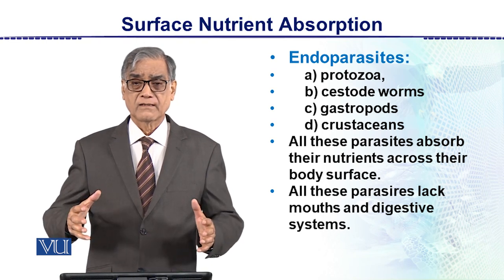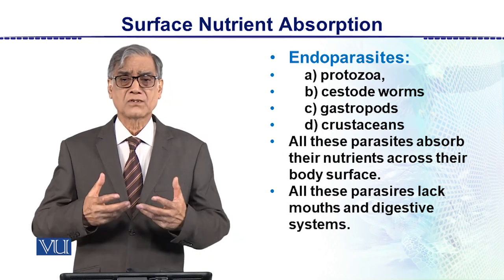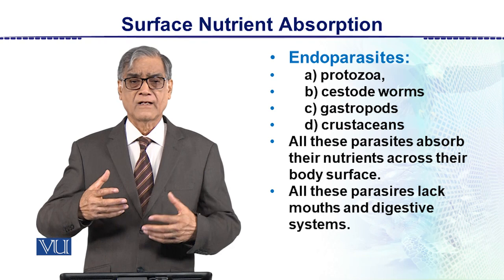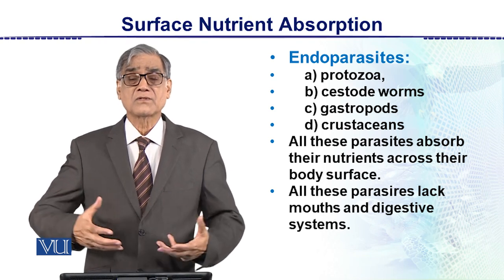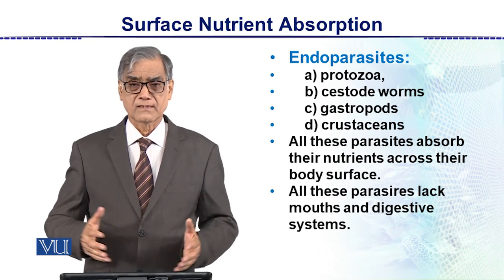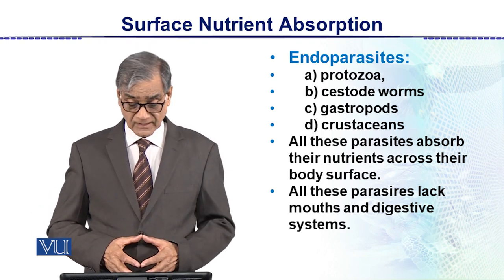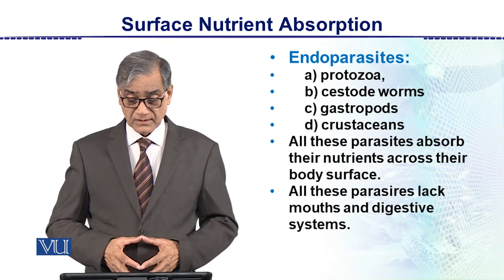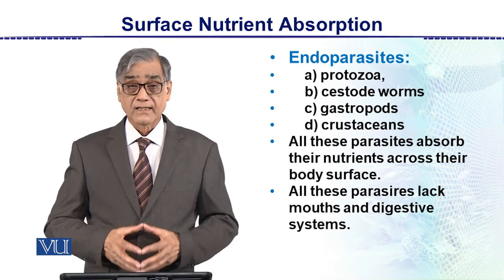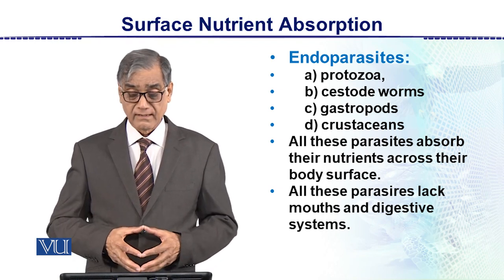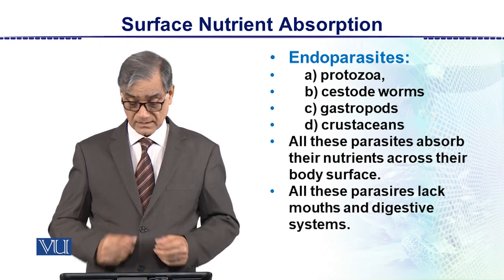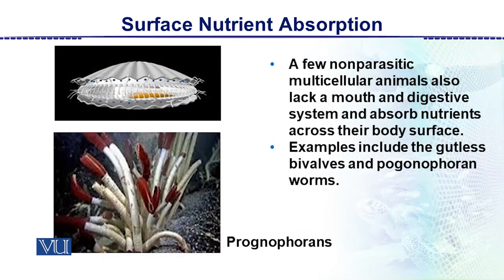The products of digestion are very small, diffusible substances that are absorbed from the surface of the body. All these parasites lack mouths and digestive systems. A few non-parasitic multicellular animals also lack a mouth and digestive system and absorb nutrients across the body surface.